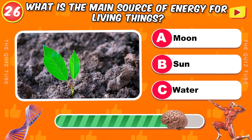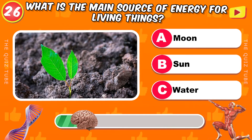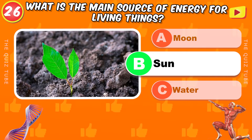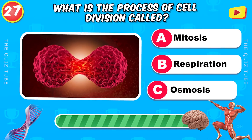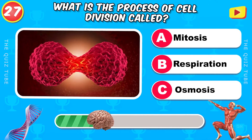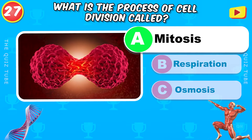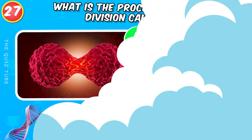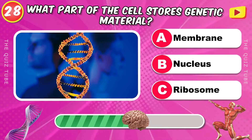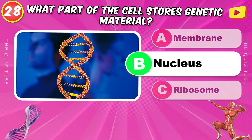What is the main source of energy for living things? The sun. What is the process of cell division called? Mitosis. What part of the cell stores genetic material? The nucleus.